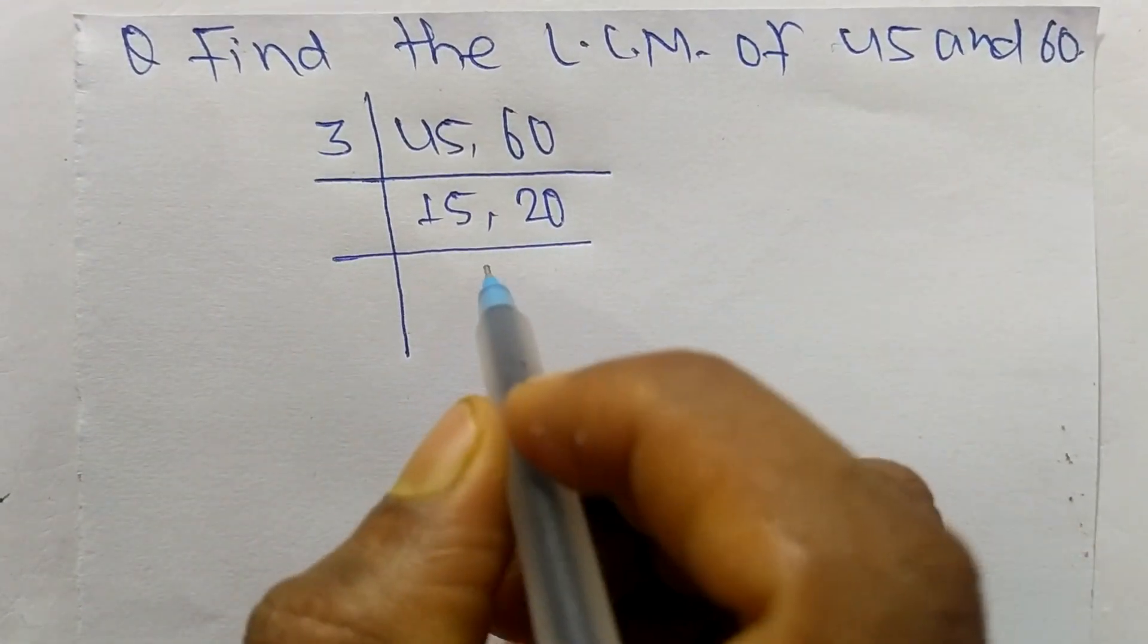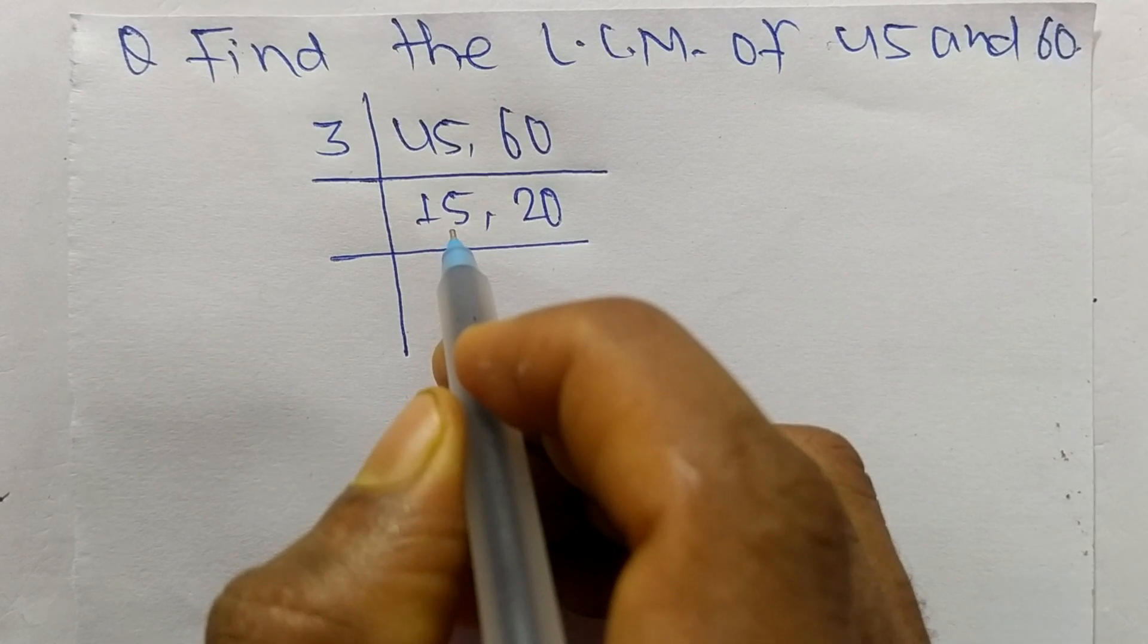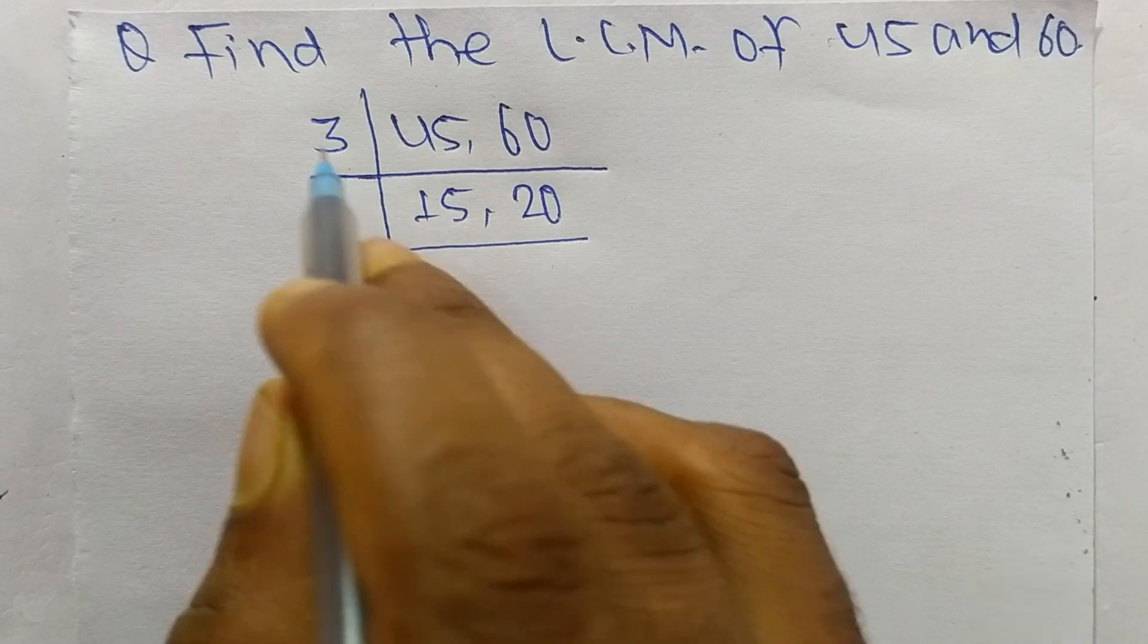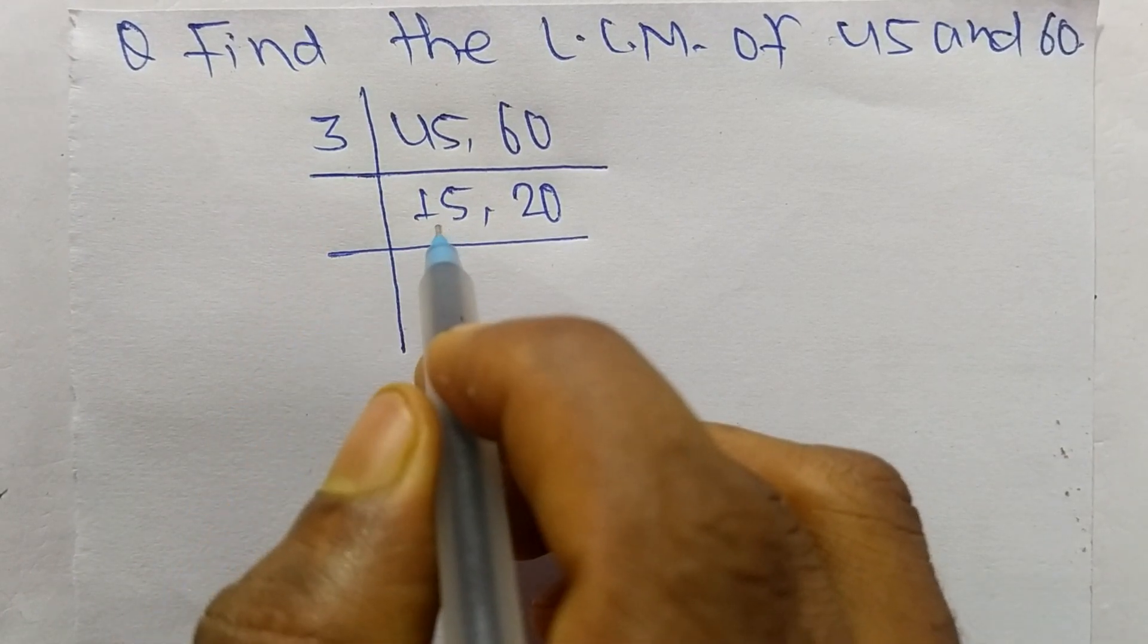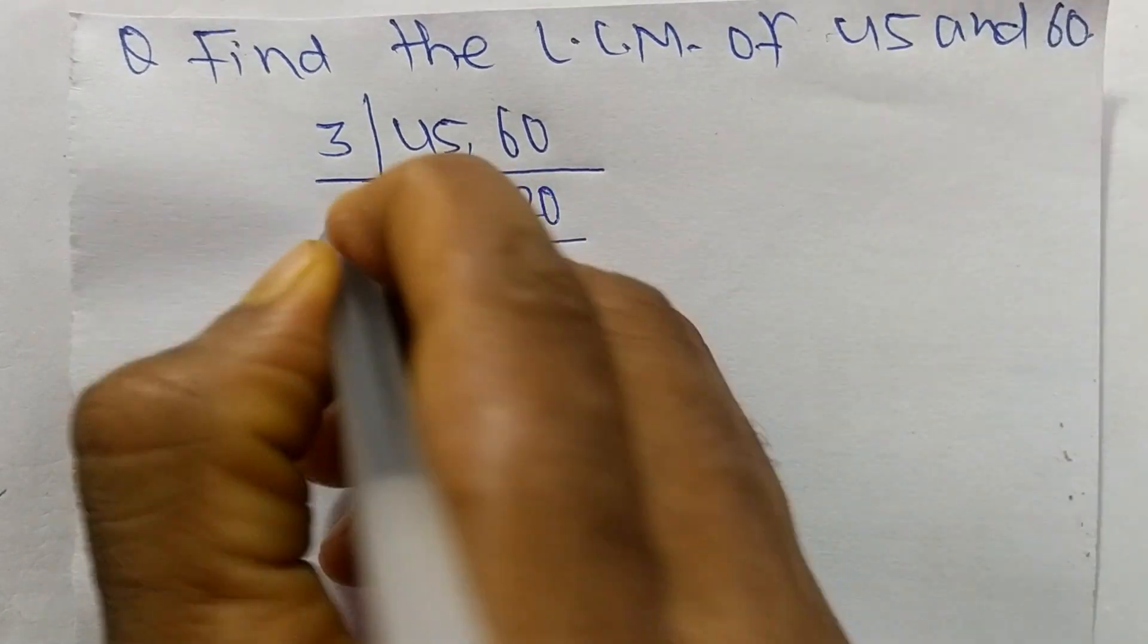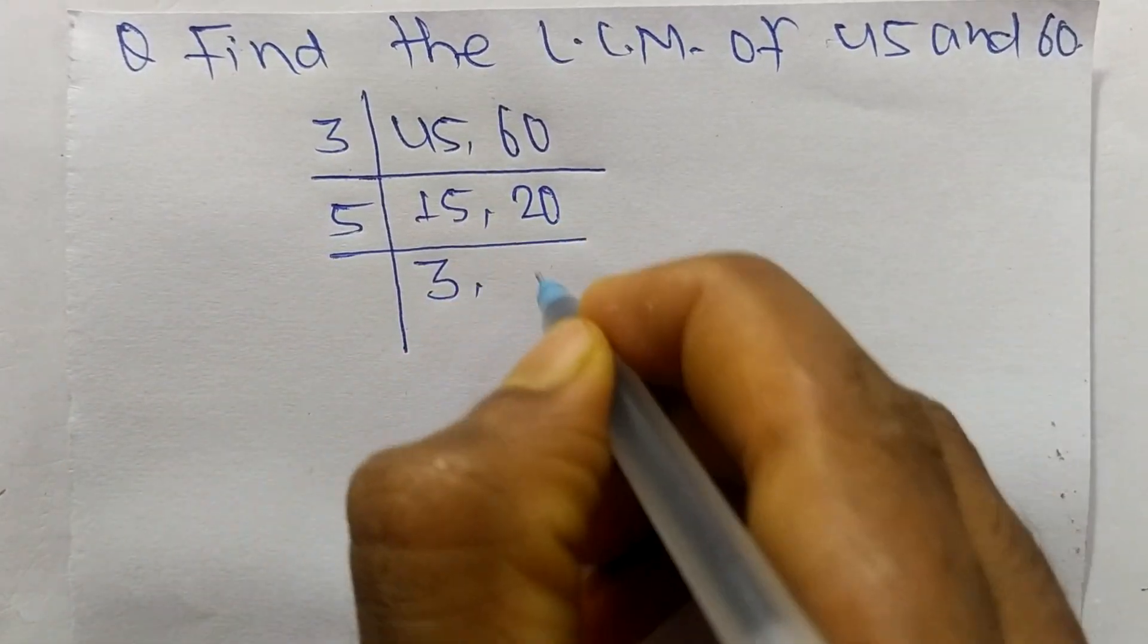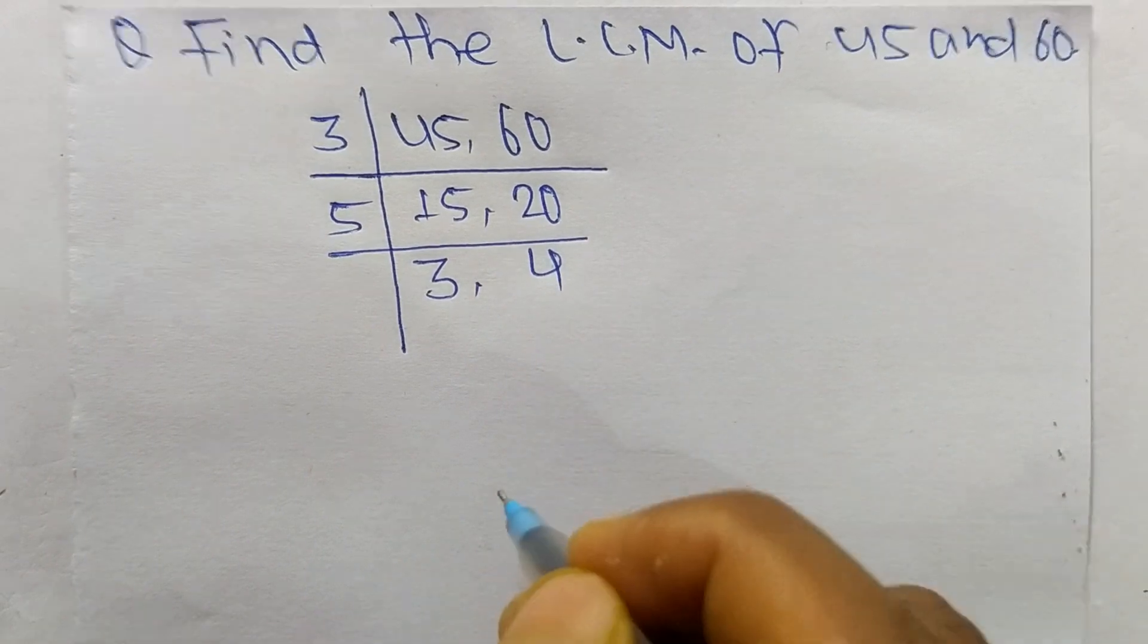Now 3 can't divide exactly 15 and 20 both. So we choose the number greater than 3 that can exactly divide 15 and 20. So the number is 5. So 5 times 3 equals 15. 5 times 4 equals 20.